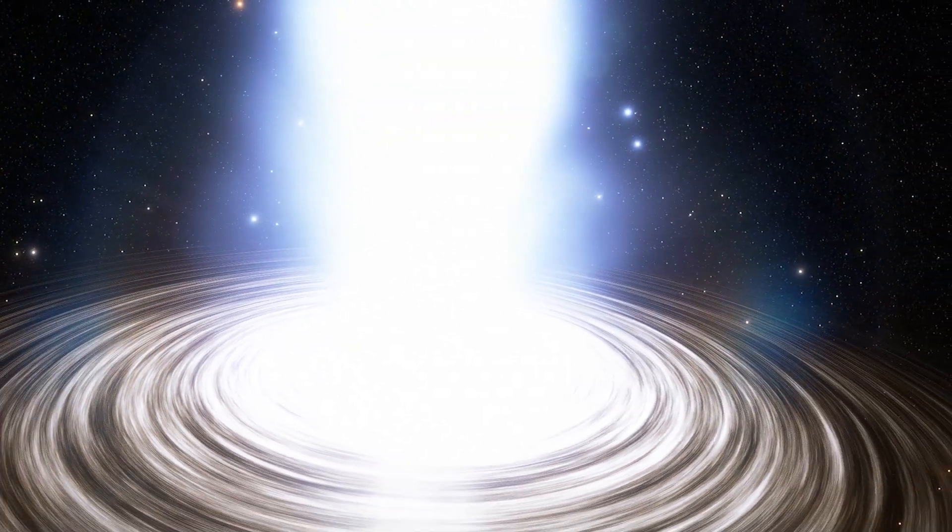When gas falls into a black hole, it spirals inwards like water down a plug hole, but not all of it is lost. Some of it is blasted out in narrow, powerful beams, known as jets by astronomers.